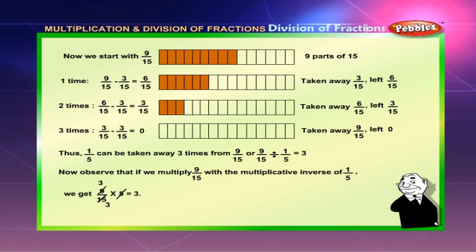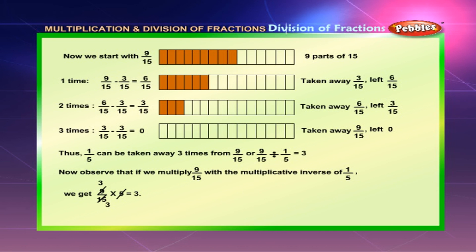Now, observe that if we multiply 9 by 15 with the multiplicative inverse of 1 by 5, we get 9 by 15 into 5, which is equal to 3.